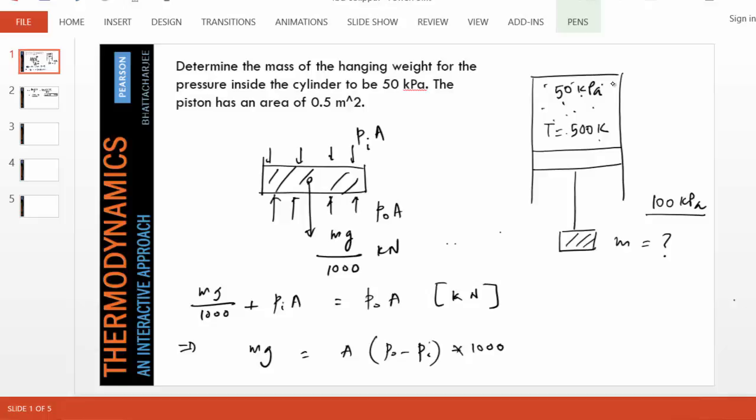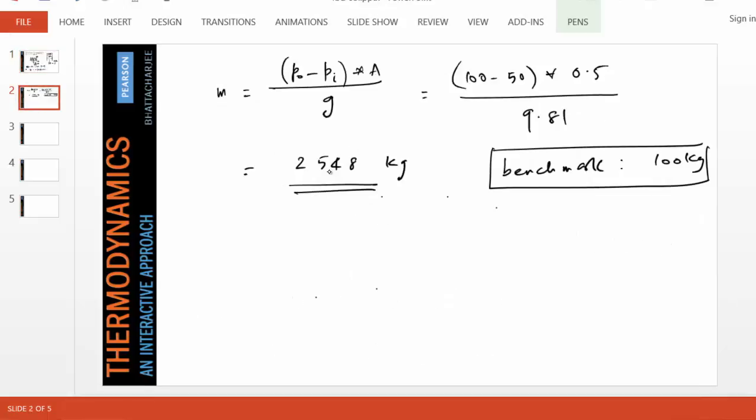As you come back to this free body diagram of the piston, you can see that as long as the force balance remains the same, the answer cannot change. So the answer is that there will be a mass of this magnitude that must be hung on this piston, and that will create a pressure of 50 kPa under all circumstances.